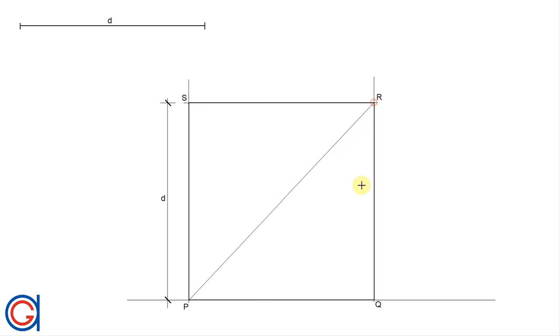And another diagonal line joining vertex Q to vertex S. Where these diagonal lines cross at a center point that we will call O.